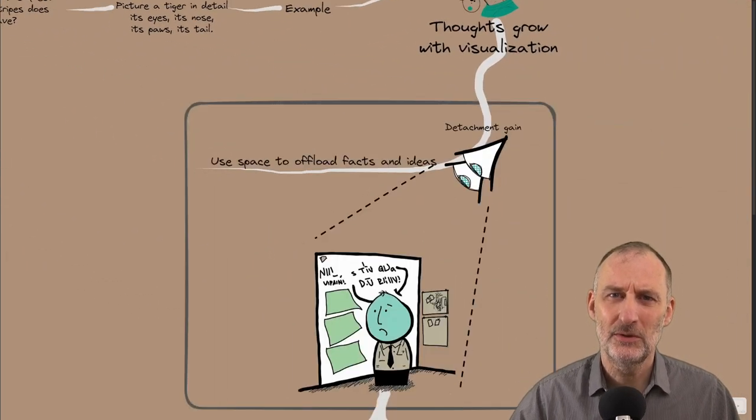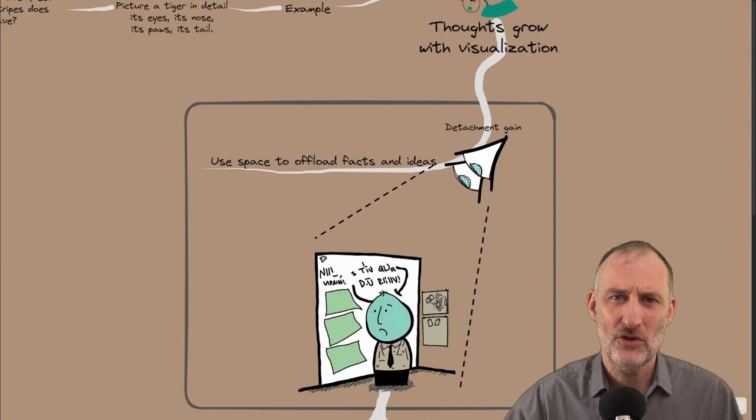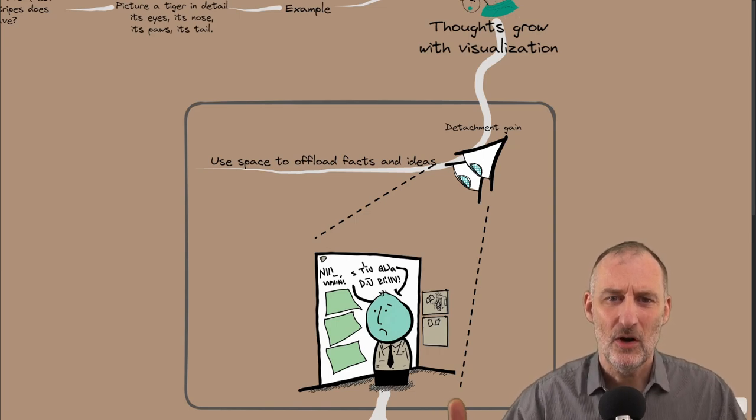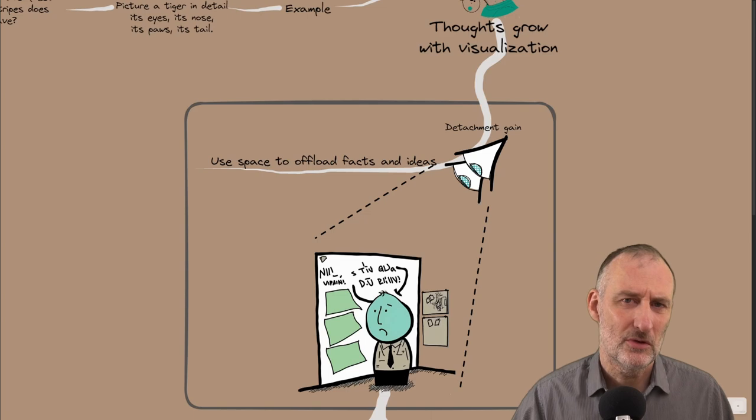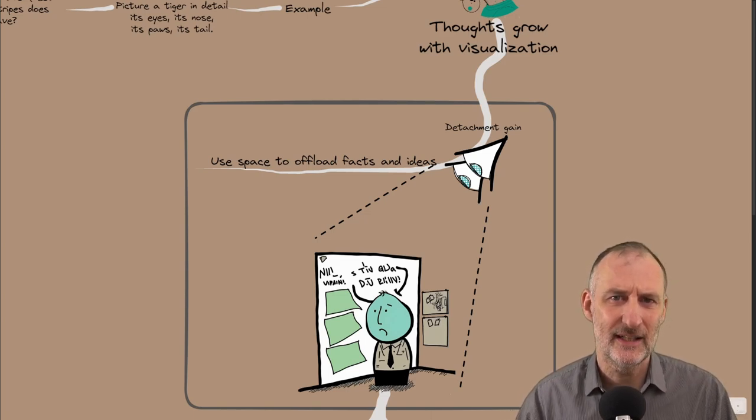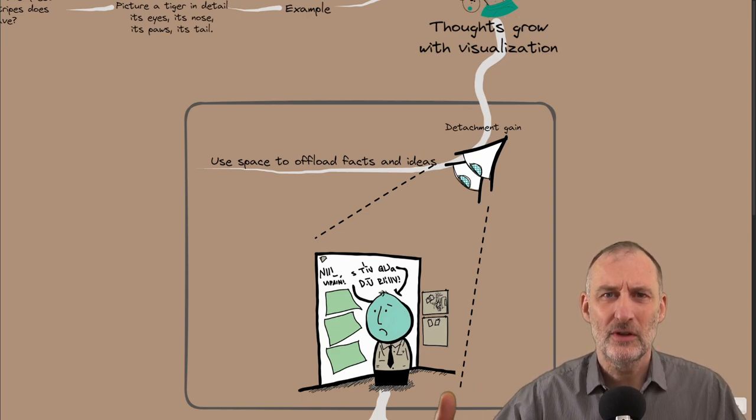So one way to practice spatial thinking is to offload your ideas onto a physical environment. For example, put it on post-it notes, or you can use the Excalidraw canvas for that, or the Obsidian canvas, or you can use a whiteboard. Really, I think your options are very broad. But offload your ideas onto a physical surface.